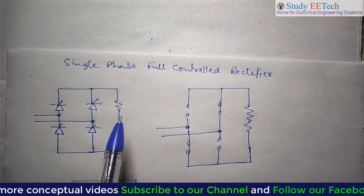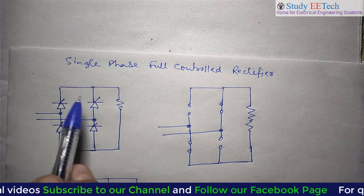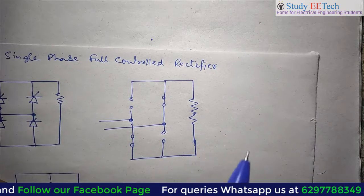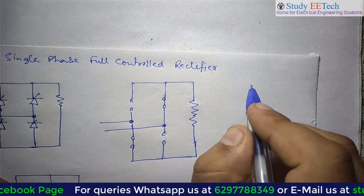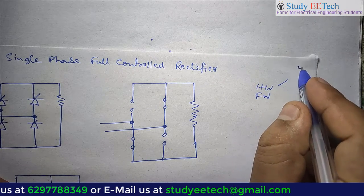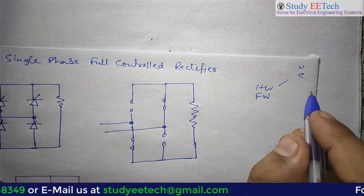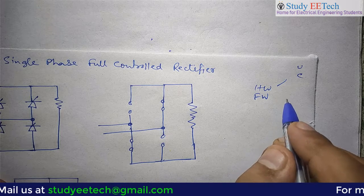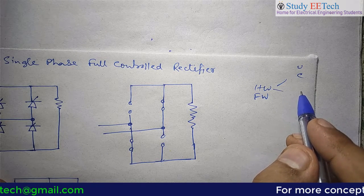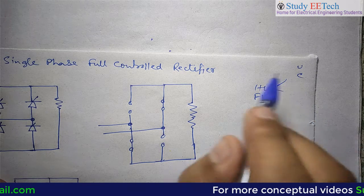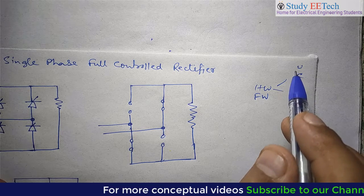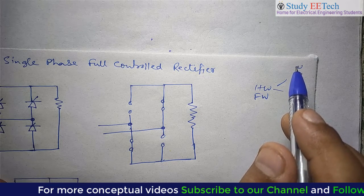Now we are moving towards the circuit where we take the bridge concept and they are the full-wave type. As we know, rectifiers can be categorized as half-wave and full-wave — that is true in case of uncontrolled rectifier as well as controlled rectifier. The half-wave controlled rectifier discussion has already been done. If you have not watched those videos, please go through the playlist and find out. It will be better if you watch the lectures sequentially.